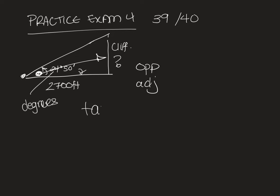So we would use tan. We can put in tan of 24°50' equals opposite, which we don't know, over adjacent. So we just take this and multiply it by the 2700.